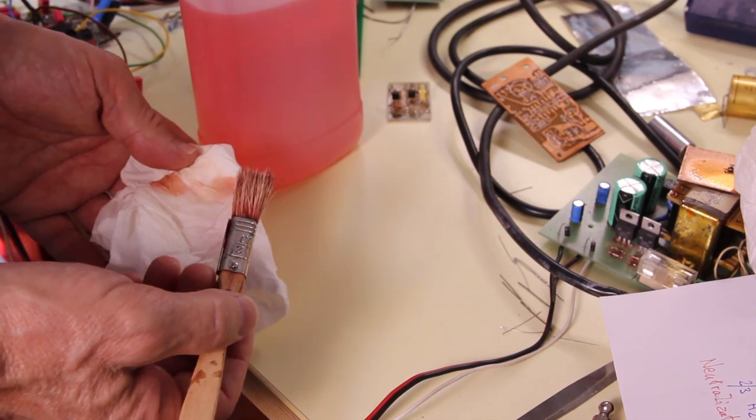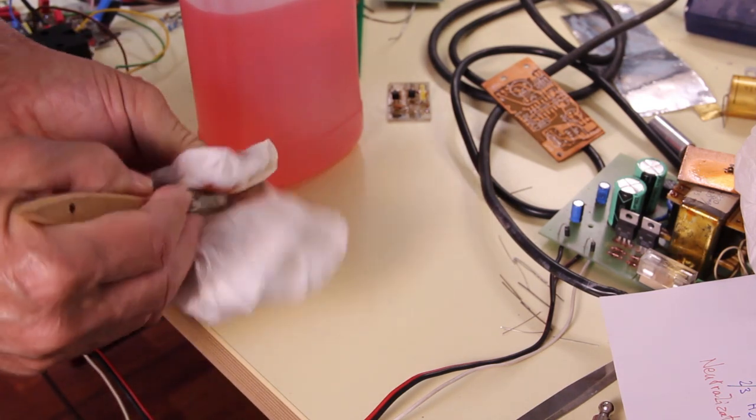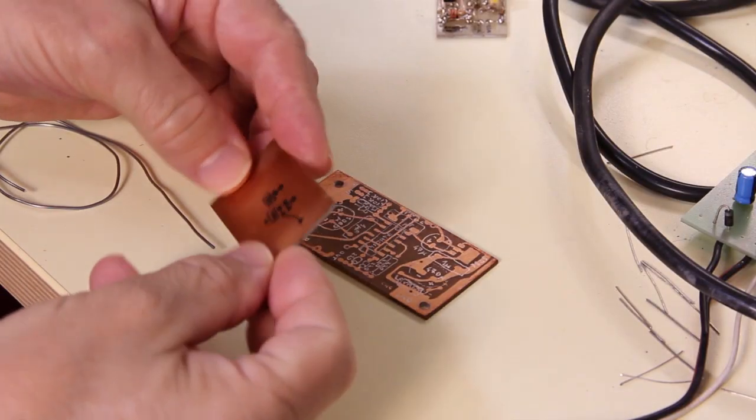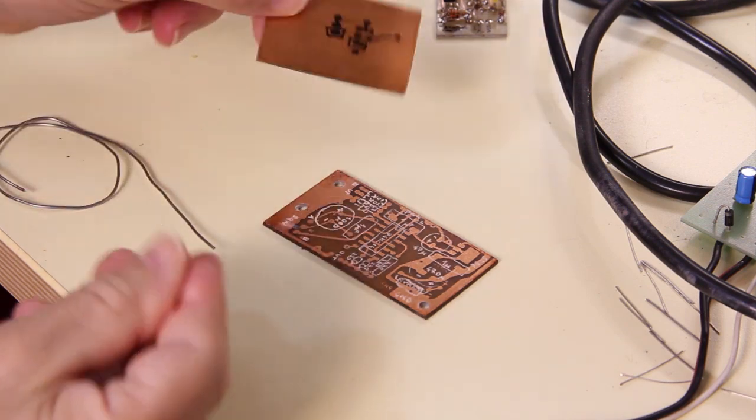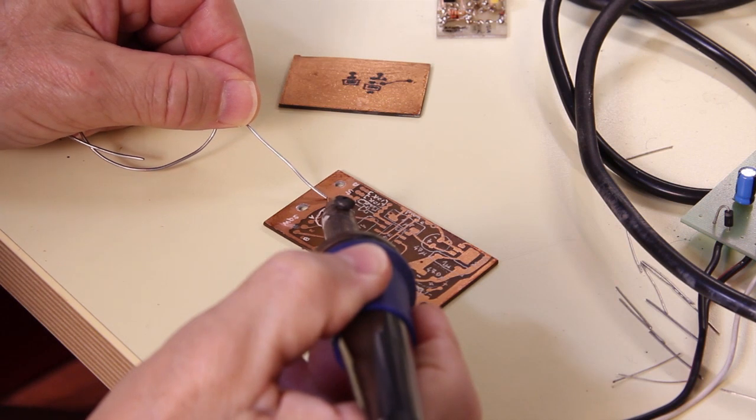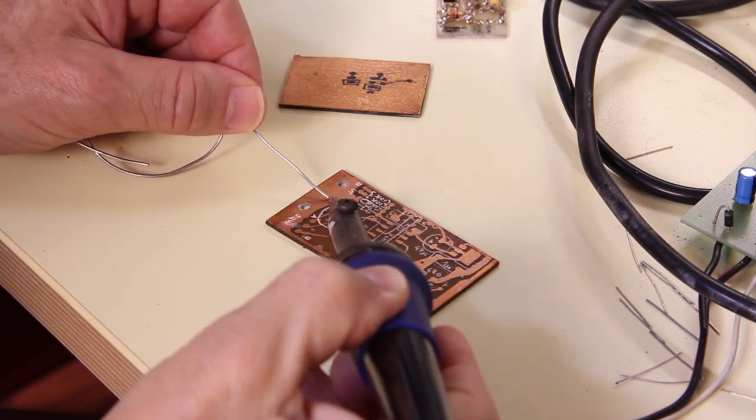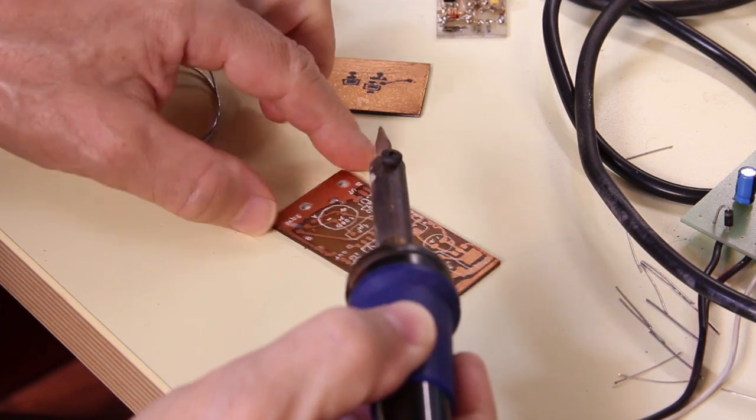Shellac not only is a good insulator and protection for the copper, but also acts as a flux for the solder and lets the solder wet very well the copper without any residue around it.